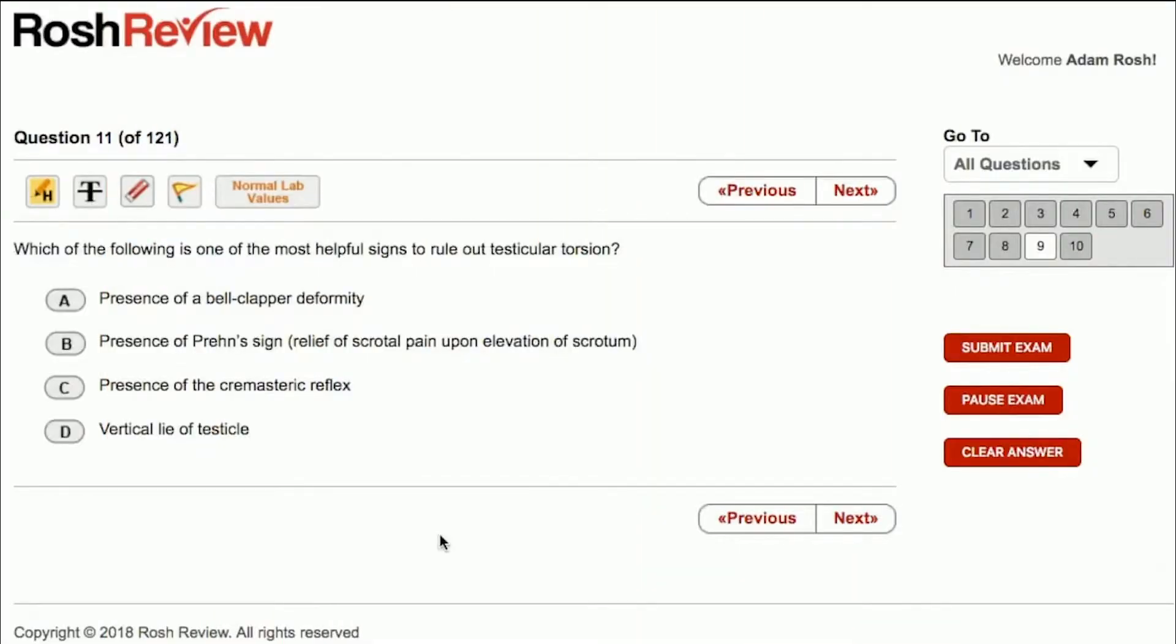All right, we have a short question here. Which of the following is one of the most helpful signs to rule out testicular torsion? So let's take a look at this. It wants to know a sign to rule out testicular torsion. Let's go through these answer choices and see if we can come up with the correct answer.